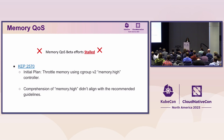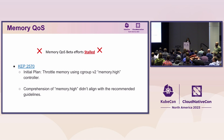All of this sounded very promising theoretically. But when we actually performed the tests, we found that our comprehension of memory.hi did not align with the recommended guidelines. Before we delve into what went wrong and the key takeaways from working on memory QoS, I'd like to do a quick refresher on Cgroups and what happens when you create a pod using pod spec in Kubernetes.